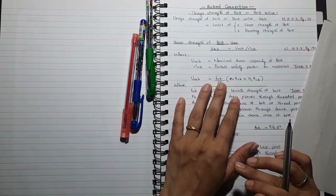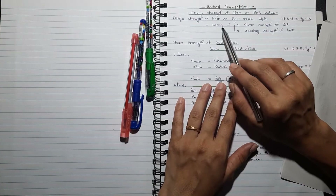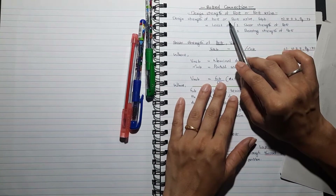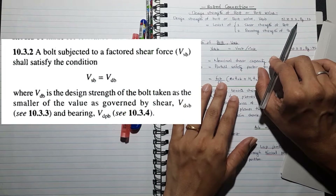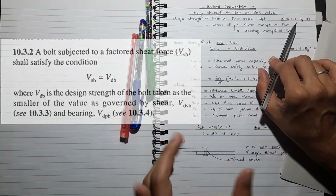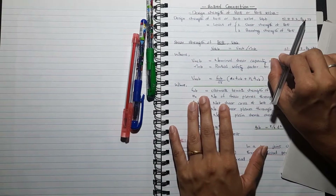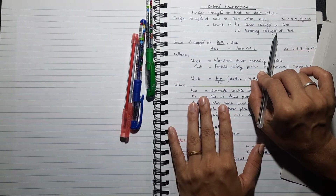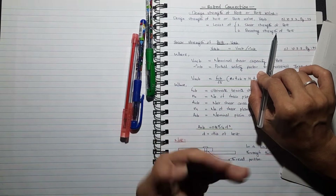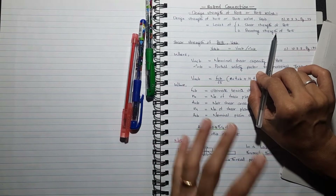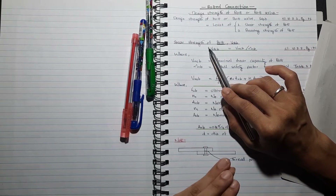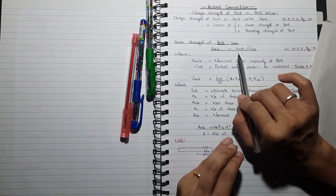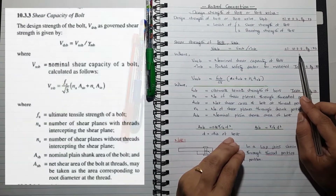Bolt value is the least of shear strength of bolt and bearing strength of bolt. The design strength of bolt — clause 10.3.2 — the least value, or smallest value, is the bolt value. Firstly, shear strength of bolt, also called VDSB.